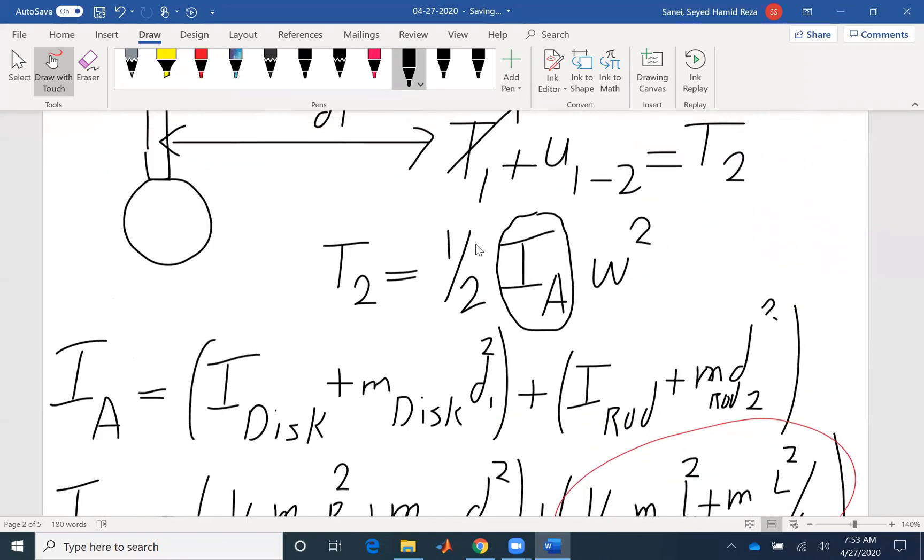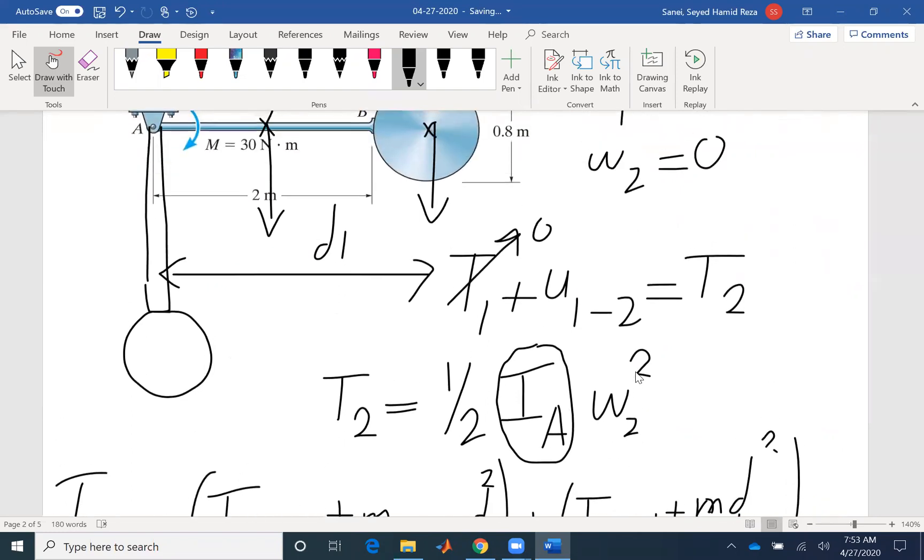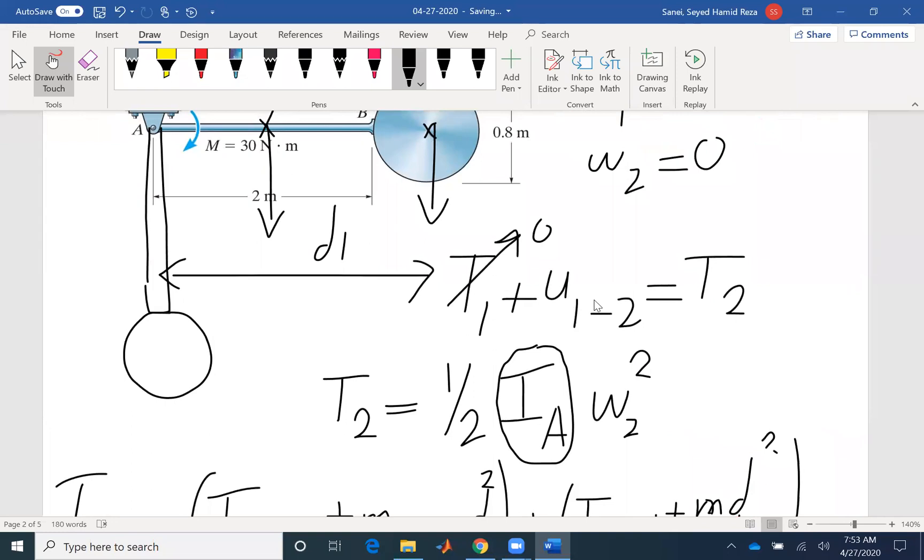For my equation, I found Ia. Omega, the second component of omega, or the omega at the final position is unknown. That would be unknown. The next thing that I need to find is the work that is done on the system.